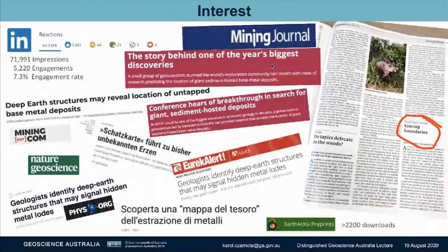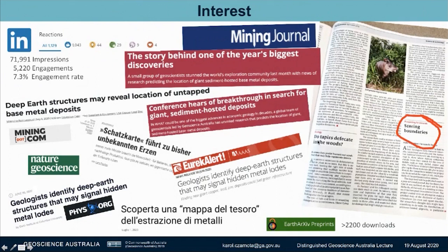Suffice to say, the initial review was wrong. There has been heaps of interest in this work. Because we were able to provide drafts of the manuscript as we went, we didn't have to wait for the publication in Nature Geoscience — we could get the information out to explorers early. One of the most interesting publications was even captured by The Economist, following a poster presentation by Fred at the European Geophysical Union. It was called 'Scoring Boundaries,' right next to an article called 'Do Tapirs Defecate in the Woods?' — a question that had never occurred to me before.